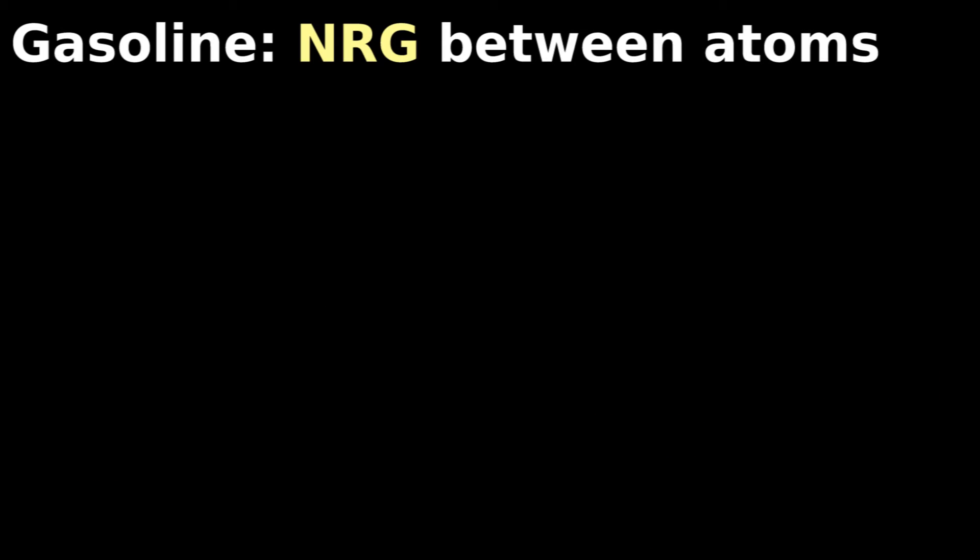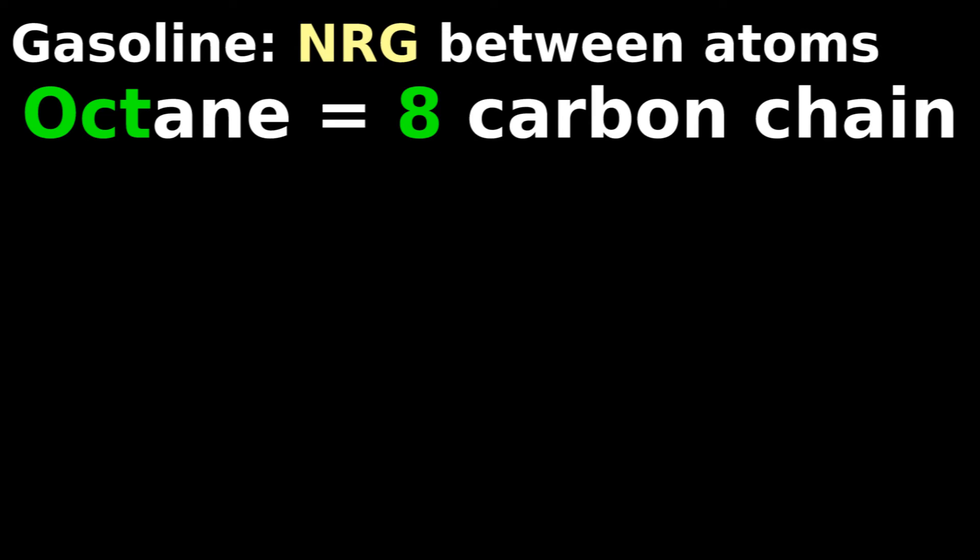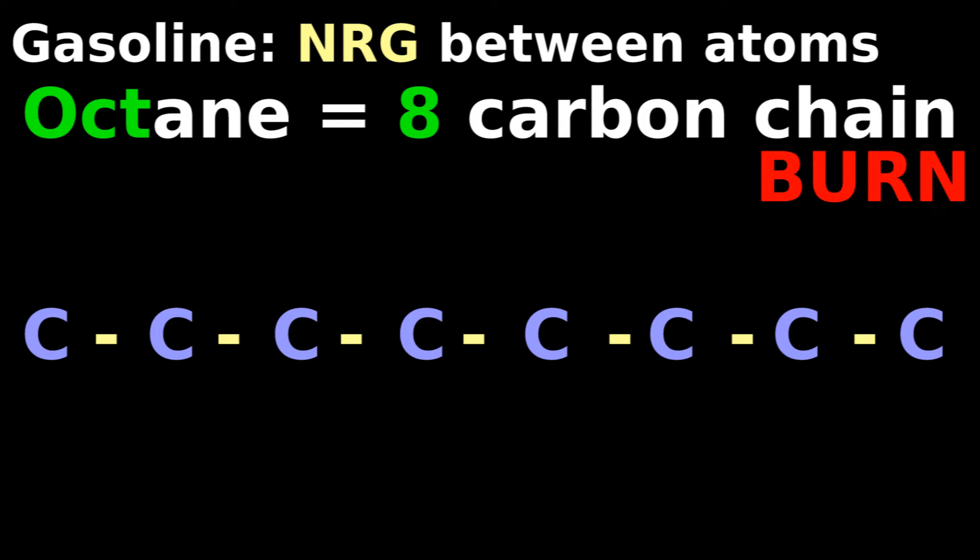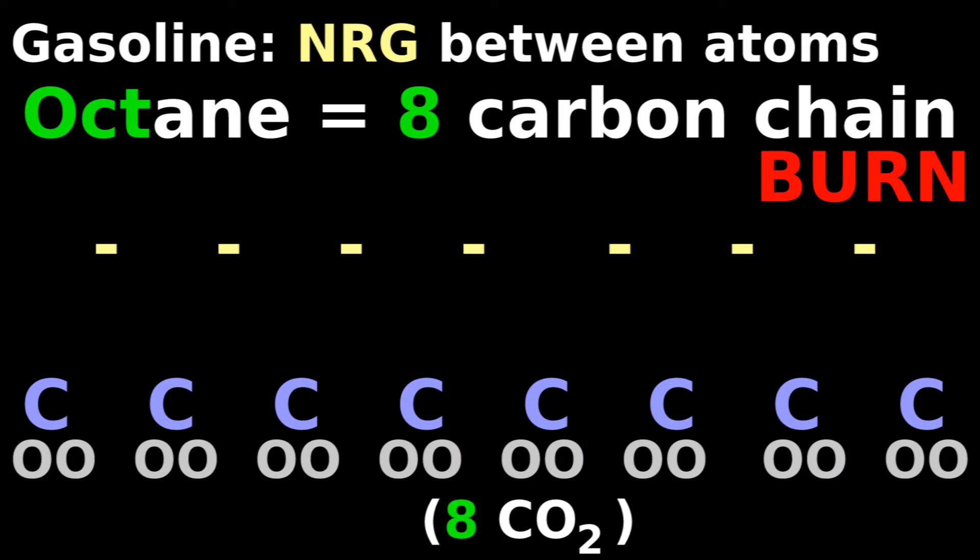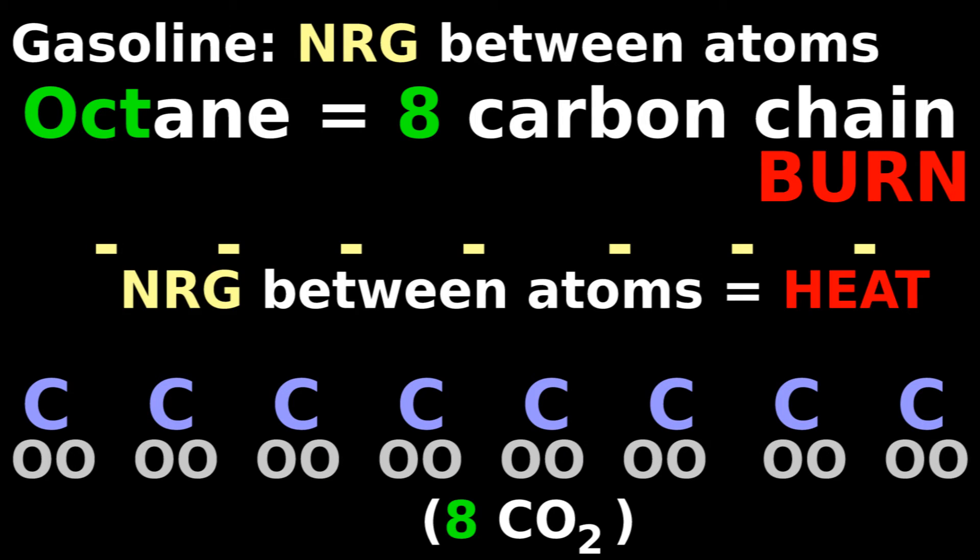Gasoline also stores energy between atoms. High-octane gasoline has eight carbons in a chain. When you burn this eight-carbon molecule into eight individual carbon dioxides, the energy that was between the carbon atoms is released as heat.